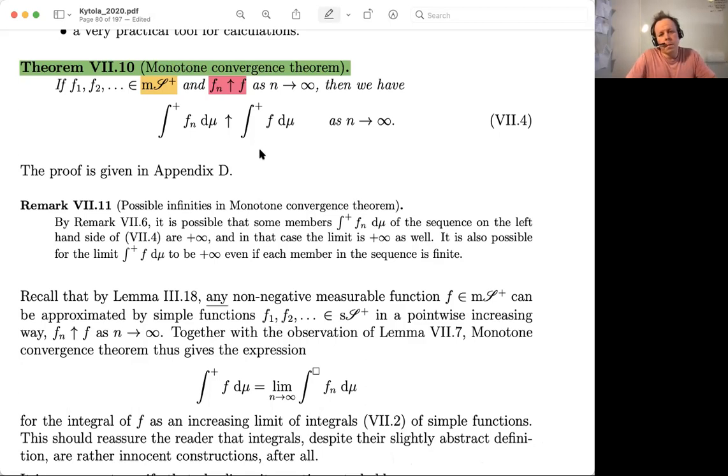So, what about a sum k from 1 to infinity f_n(k)? If we assume that we have functions on the integers, and assume that these functions f_n increase to some limit f again, and everything is non-negative in this picture.